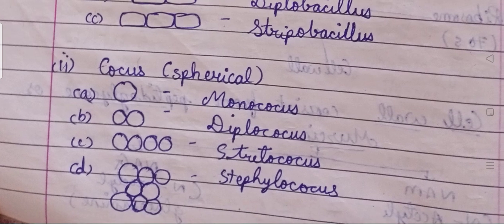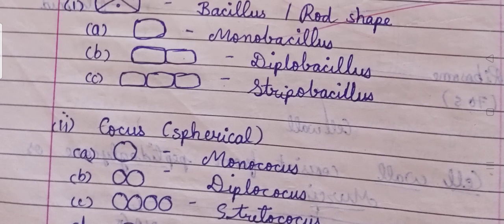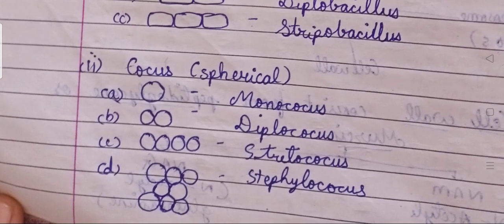Staphylococcus bacteria are spherical bacteria arranged in clusters, like a bunch of grapes. So on the basis of shape, bacteria are divided into: bacillus (rod-shaped), diplobacillus (rod in pairs), streptobacillus (rod in chains), monococcus (single sphere), diplococcus (spherical in pairs), streptococcus (spherical in long chains), and staphylococcus (spherical in clusters).